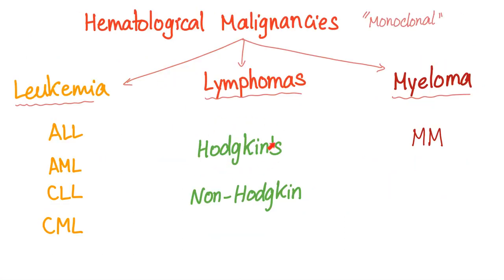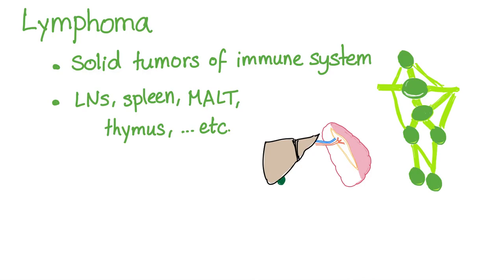We have talked about Hodgkin's lymphoma before in my playlist called Hematology, but in a nutshell, hematological malignancies are leukemias, lymphomas, or multiple myeloma — and Hodgkin's lymphoma is a lymphoma. A lymphoma is a solid tumor of the immune system; it could be in the lymph nodes, the spleen, or the mucosa-associated lymphatic tissue, thymus, etc.